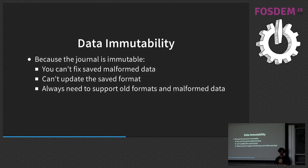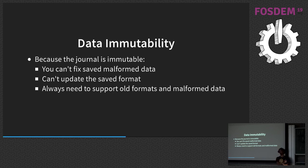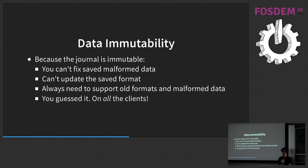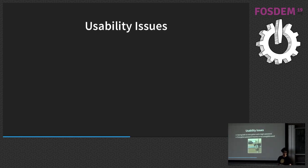Something more unique to EtterSync is data immutability. Because the journal is immutable, you can't fix malformed data — if there was a bug in the past that wrote malformed information into the journal, you have to deal with that bug forever. You also can't update the save format: even if you have all the upgrade code and all the clients ready, you still have to support the old format forever, because it's immutable — on all clients, for all eternity.